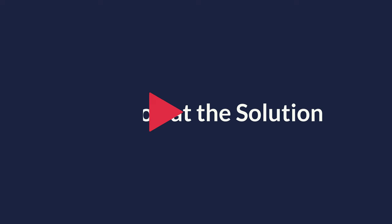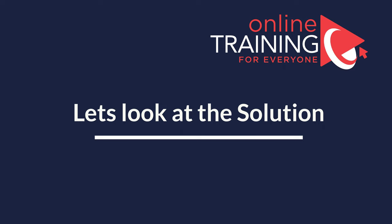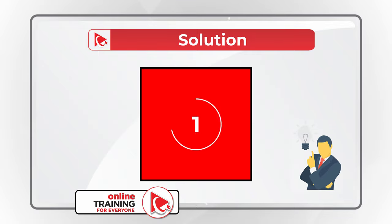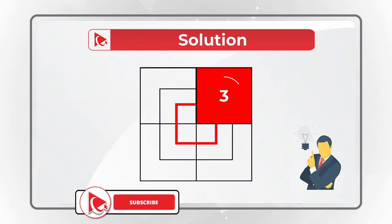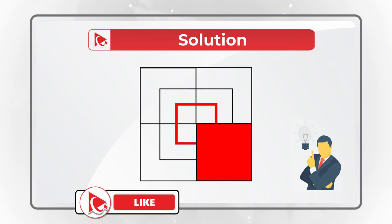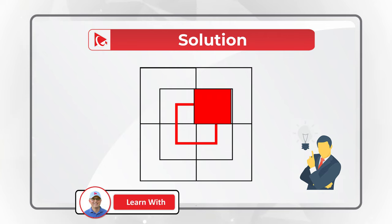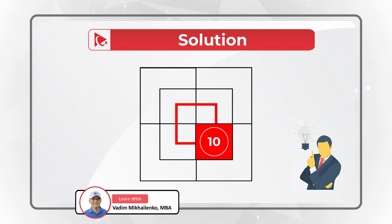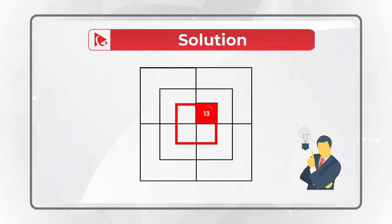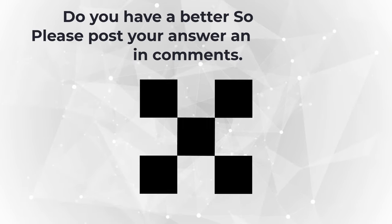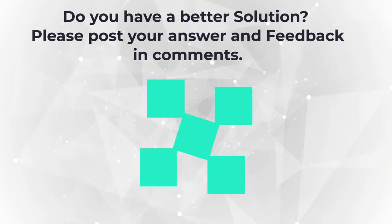Ready or not, I am moving forward to get you to the correct solution. Believe it or not, I counted 15 squares on this picture. Let me show them all to you: 1, 2, 3, 4, 5, 6, 7, 8, 9, 10, 11, 12, 13, 14, and 15. Did you get to a different number? Please correct me and post your solution in the comment section of this video.